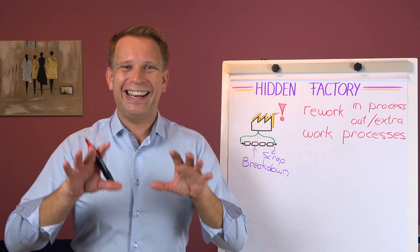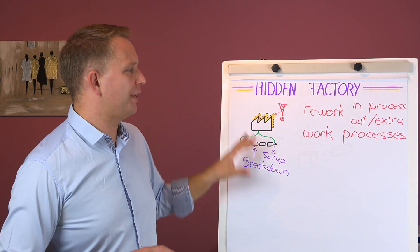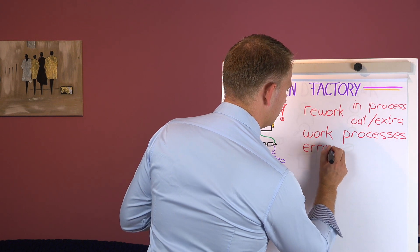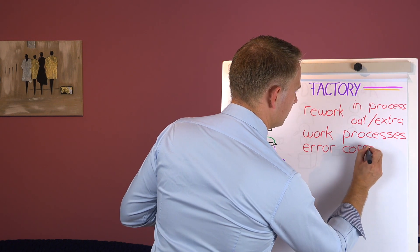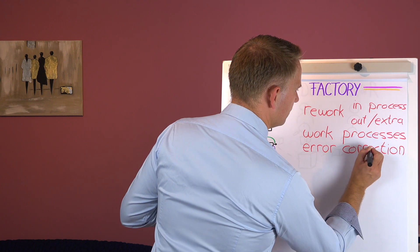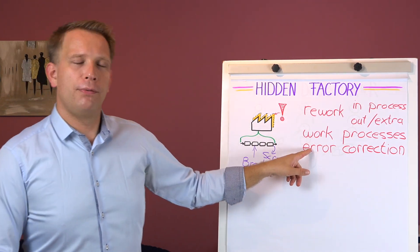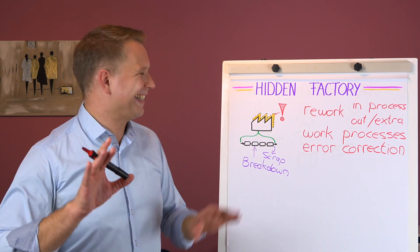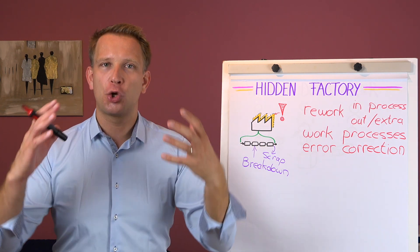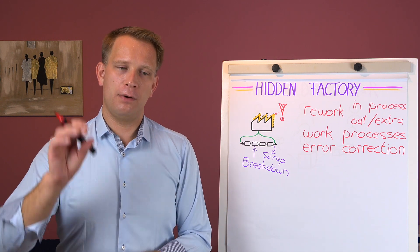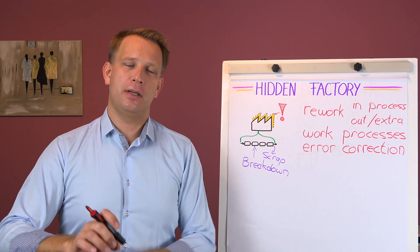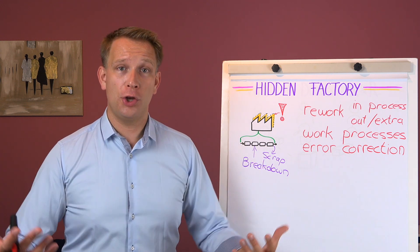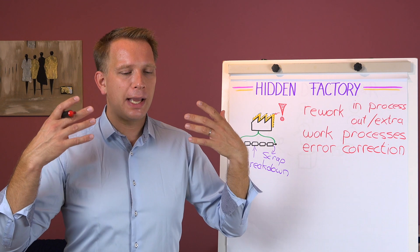Also with your work processes, so think of every time you have to correct errors. All those things—that is the hidden factory. That is the core philosophy when you do an analysis of the effectiveness of your organization, and also the cost and your losses.